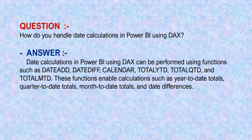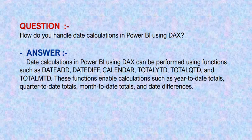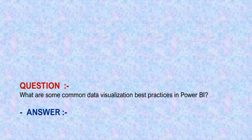Our next question is, how do you handle date calculations in Power BI using DAX? Date calculations in Power BI using DAX can be performed using functions such as DateAdd, DateDiff, Calendar, TotalYTD, TotalQTD, and TotalMTD. These functions enable calculations such as year-to-date, quarter-to-date, and month-to-date aggregations.